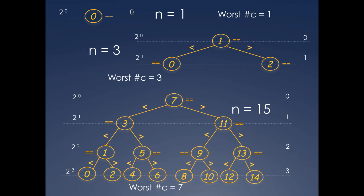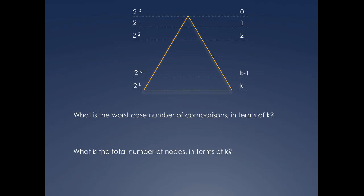Now, imagine an ideal tree structure with levels numbered 0, 1, 2, all the way through k. In other words, there are k plus 1 levels. The last level number k is also what's called the height of the tree. It's the number of branches from the root to the lowest leaf. A tree of height k has k plus 1 levels. Remember that we are only looking at successes, so all nodes are success nodes. What is the worst case number of comparisons for success in terms of k? And what are the total number of nodes in terms of k?